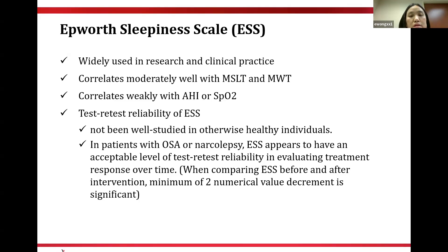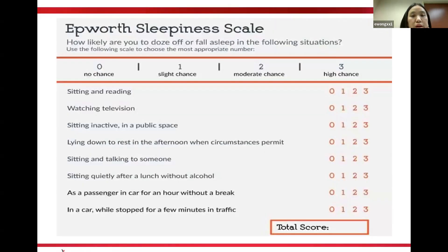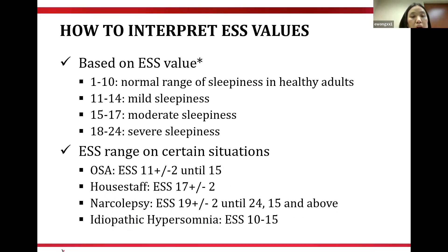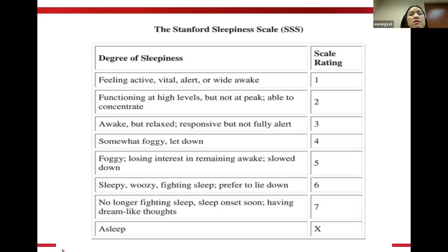That is why we obtain the Epworth Sleepiness Scale at every follow-up visit. A significant improvement in sleepiness is suggested if the Epworth value drops by at least two points before and after treatment. The scale has eight situations; we ask patients how likely they are to doze off in each. Scores of 1–10 are normal; 11–14 mild; 15–17 moderate; 18–24 severe. Sleep apnea patients typically score around 11±2, hypersomnia around 17±2, and narcolepsy around 19±2.